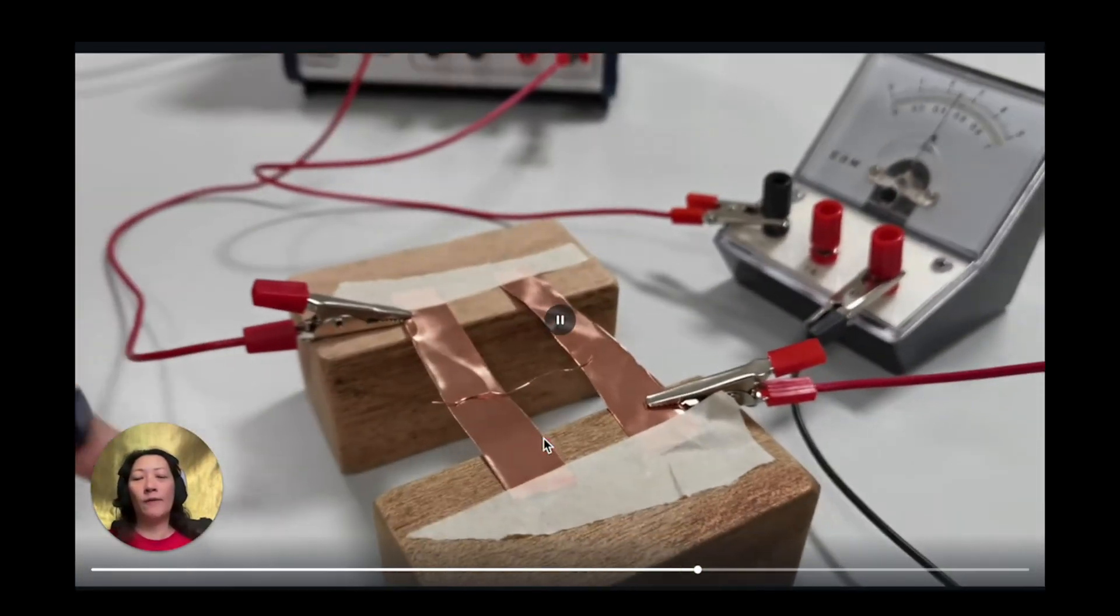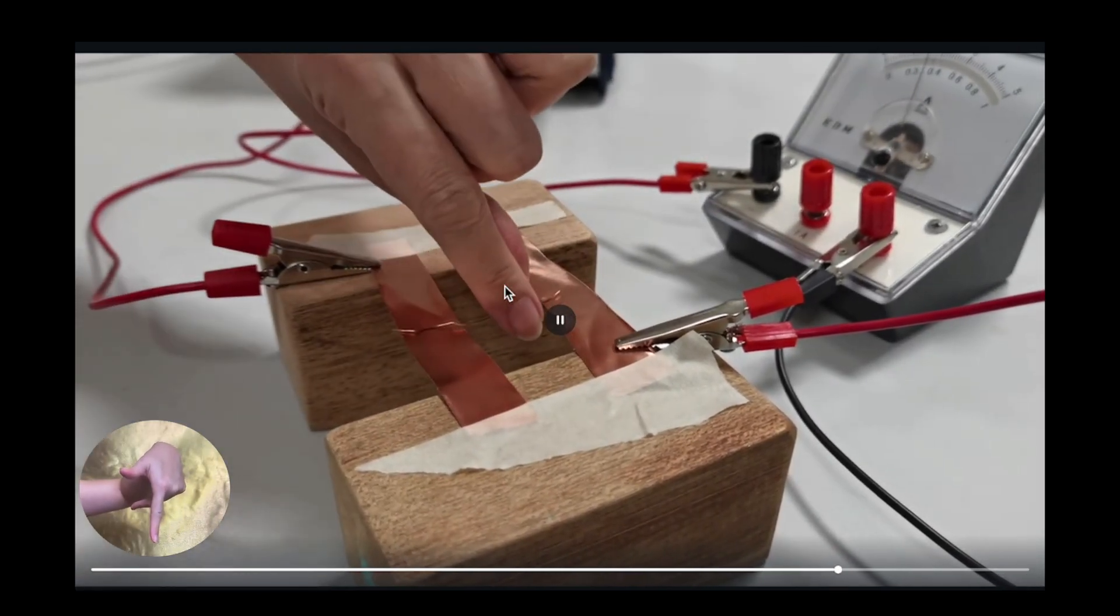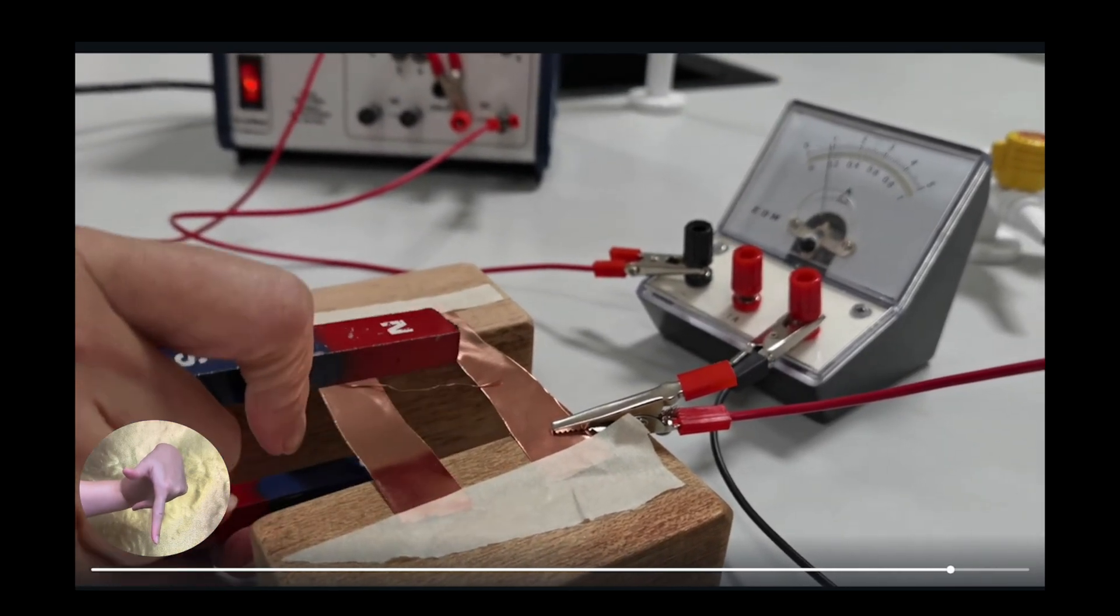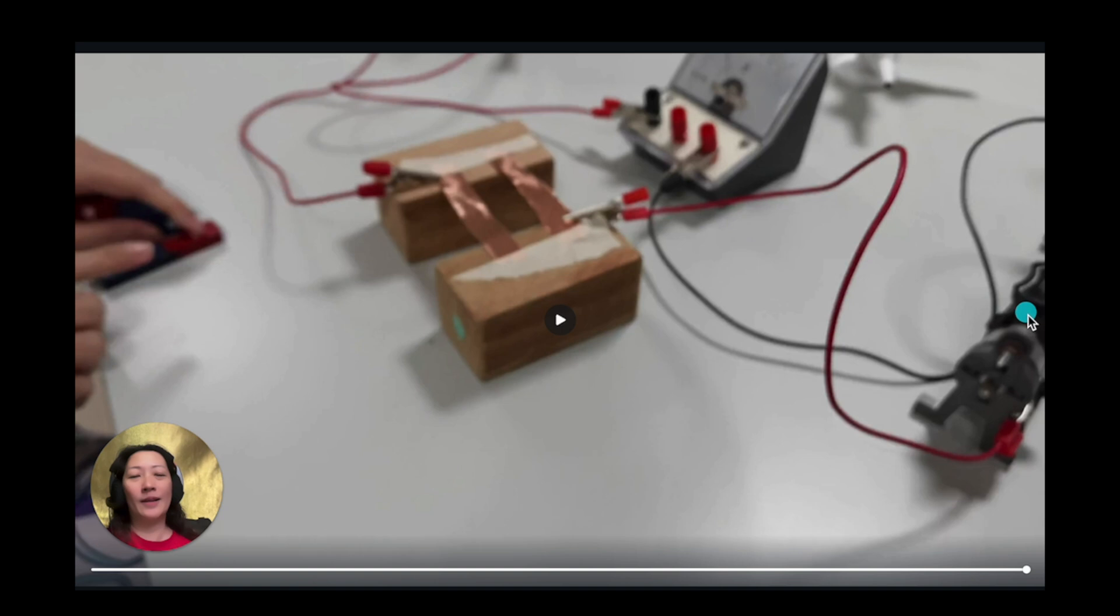When we flip the bar magnets you can see now north is on top. Current that way, the magnetic field is now pointing downwards, the force is moving that way so that's why the wire shifted there. Let's watch that one more time.